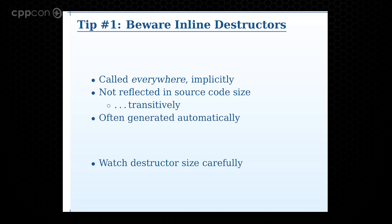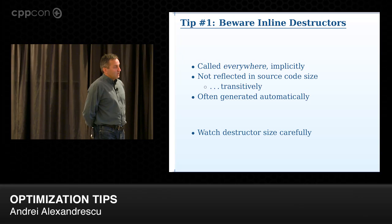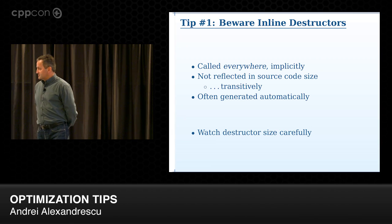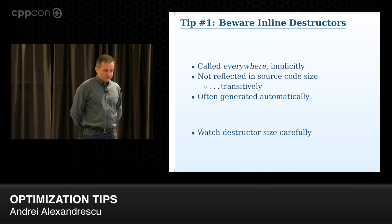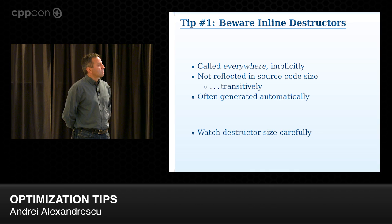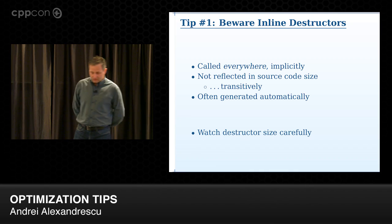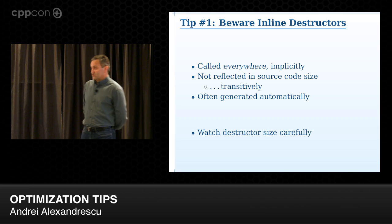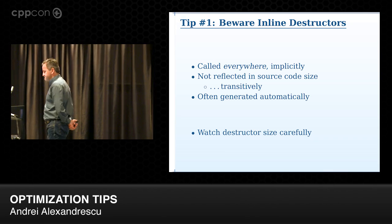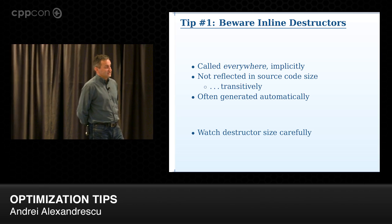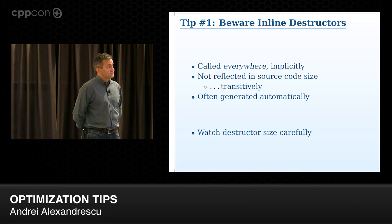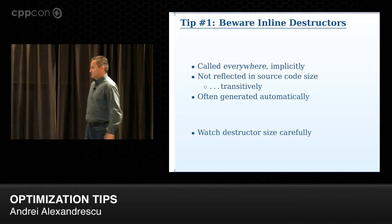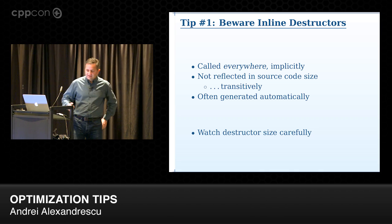Tip number one: beware inline destructors. Beware — it doesn't mean don't do them. I'm not saying don't do them; I'm saying be aware of what they're costing you. Inline destructors are called everywhere implicitly. They add significant code to functions that may throw, because you need the whole cleanup code. That's why it's nice to adorn your functions with noexcept whenever possible. They're not reflected in source code size, and that's a transitive effect.